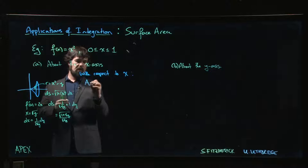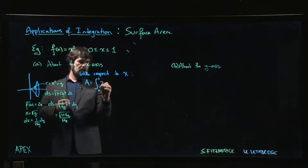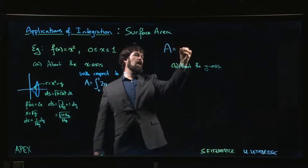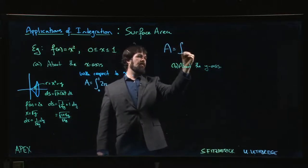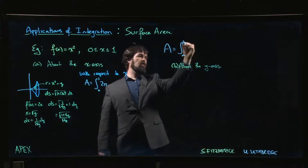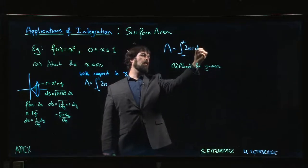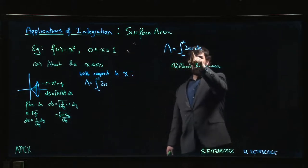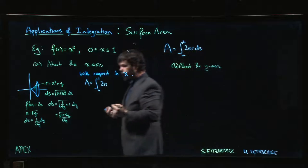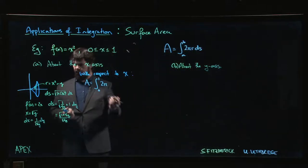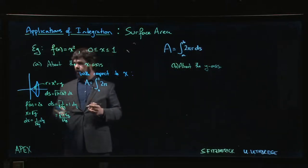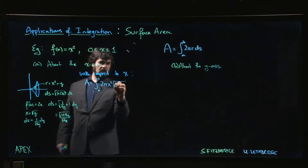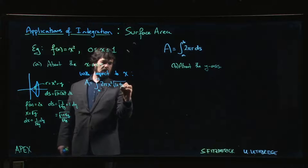The integral from 0 to 1, it's always 2π. The area, however you set it up, is going to be integral from some limits, 2π r ds, and you have to decide whether r and ds should be expressed in terms of x or y. If we express in terms of x, then the radius is x squared, ds becomes 1 plus 4x squared.